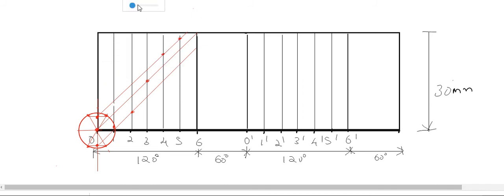Taking the color again and smoothly passing over those points gives the displacement diagram for the outstroke. Since the return stroke in this case also has cycloidal motion, the same methodology applies. However, return stroke may have simple harmonic motion, UARM, or another type, so you should use the appropriate methodology for that.